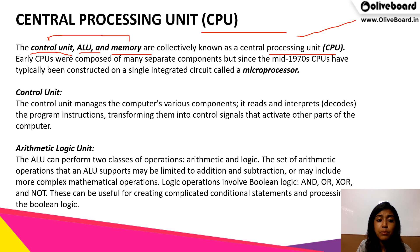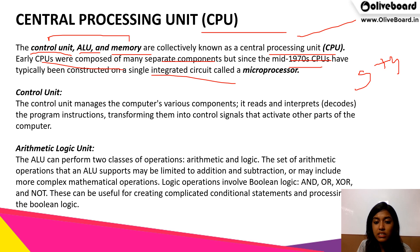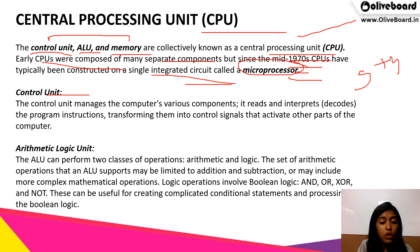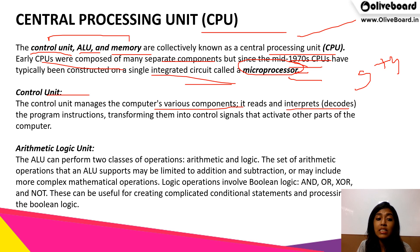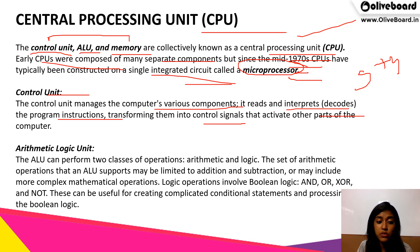Earlier, CPUs were composed of many separate components, but since the 1970s or the fifth generation of computers, it has been typically constructed on a single integrated circuit called a microprocessor. When we talk about the control unit, it manages the computer's various components — it reads and interprets, that is decodes, program instructions and transforms them into control signals that activate other parts of the computer.